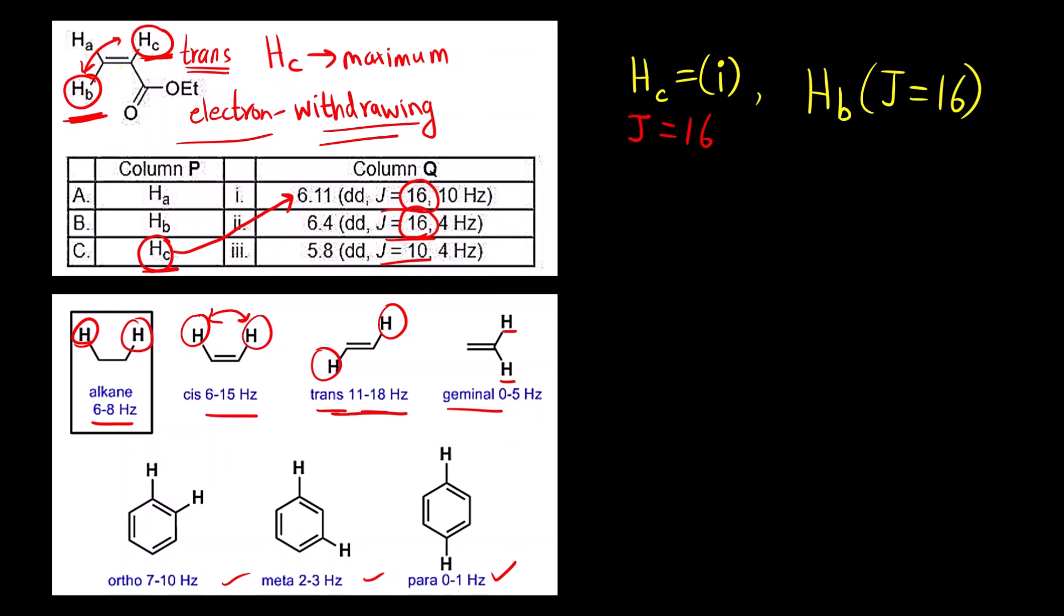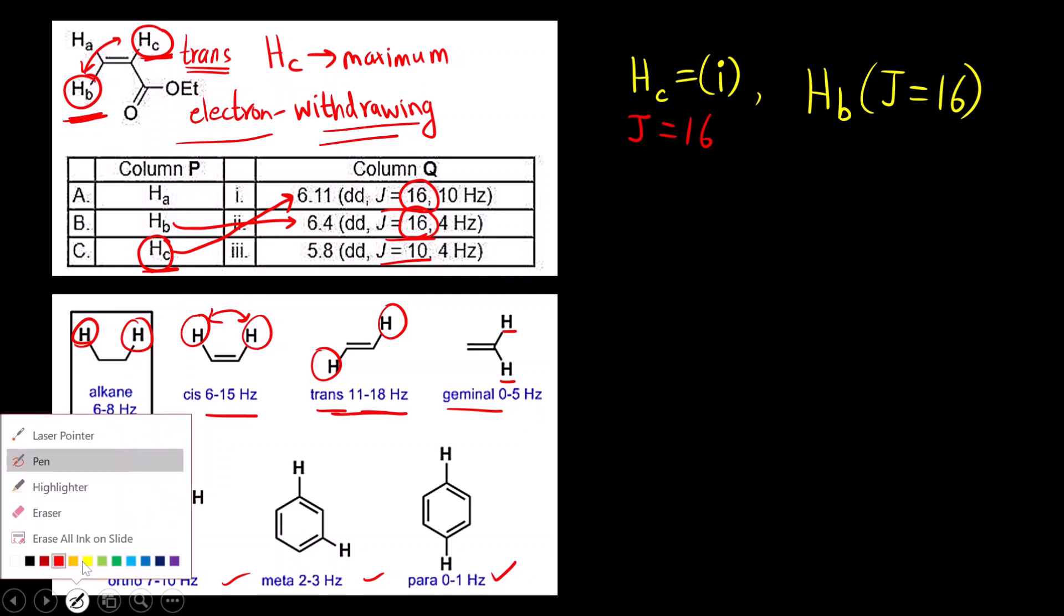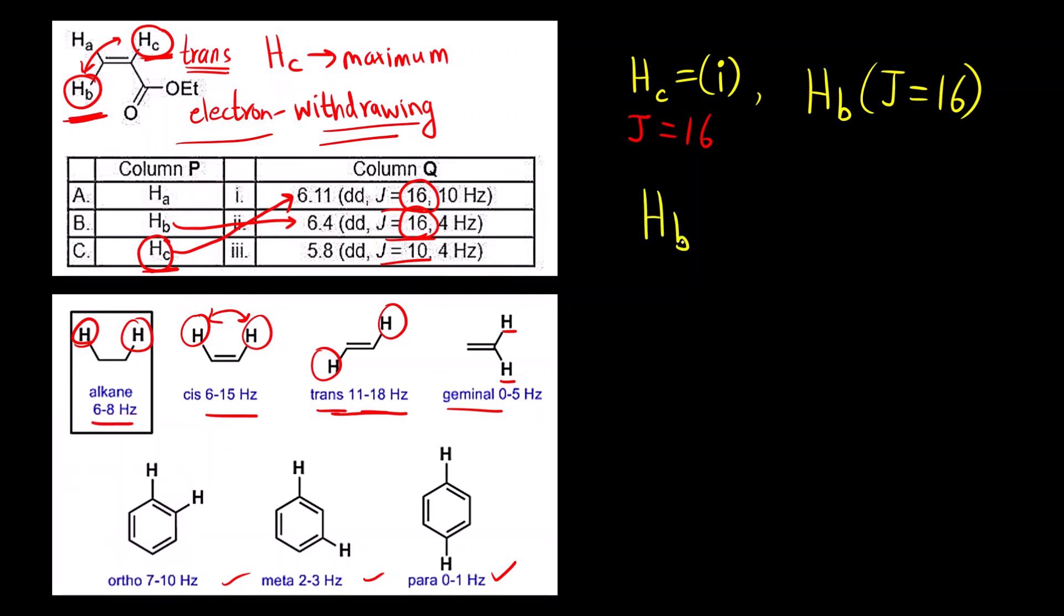There is trans coupling that is taking place. For H_B, which is going to be the correct answer? The one that is 16. So for H_B, it is 2. I want to write down the answer. H_B, it is option 2.